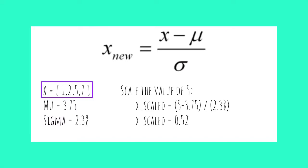Here you can see we have the same values we had in our first example. If we again scale the value of five, we plug in five for x, our value of mu which is 3.75, and finally 2.38 for sigma, as that is the standard deviation of our list. That gives us the final scaled value of 0.52. This means the value is 0.52 standard deviations above the mean.